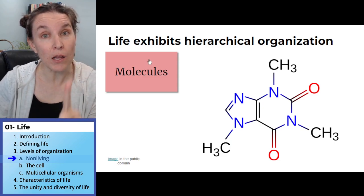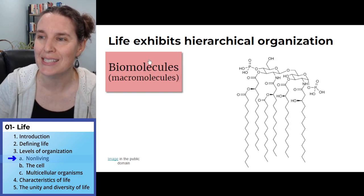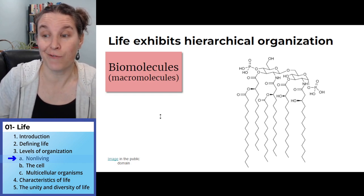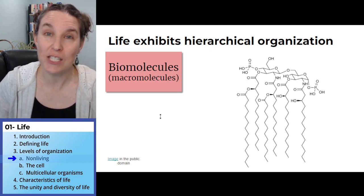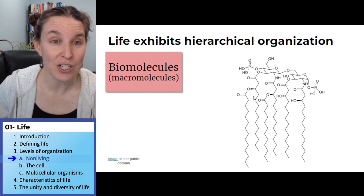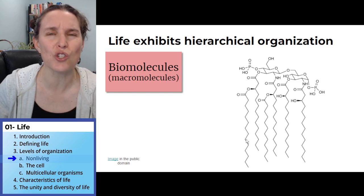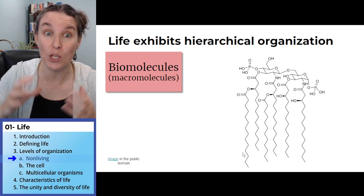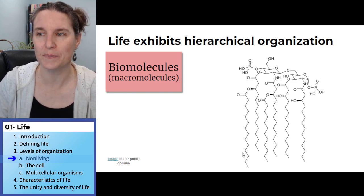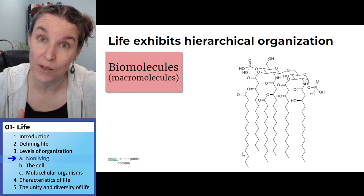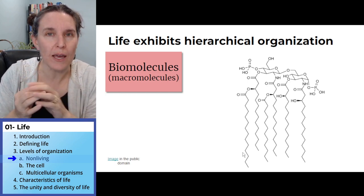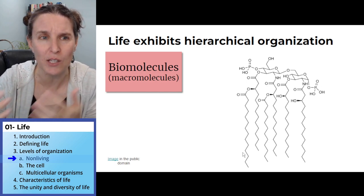Molecules can be used to build bigger molecules. An example of a bigger molecule is this biomolecule, or macromolecule — this is a gigantic lipid. These are strings of carbons and hydrogens, and we'll look at those in more detail. You can see that's a little more complicated than the caffeine molecule. So you can see how we started simple with electrons, protons, and neutrons, and now we're using those things to build atoms, elements, molecules, and biomolecules — getting more and more complex.